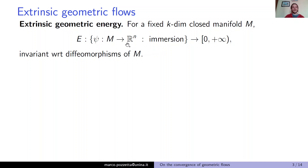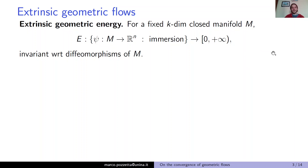You can think of E as our energy. It depends exactly on the specific immersion — on how the manifold M is immersed inside an ambient space — and this is why we call it extrinsic. It is geometric in the sense that it is invariant with respect to diffeomorphisms of M: if two immersions differ by a diffeomorphism of the domain, the geometric object inside R^n doesn't change, and so we require that the energy doesn't change as well.